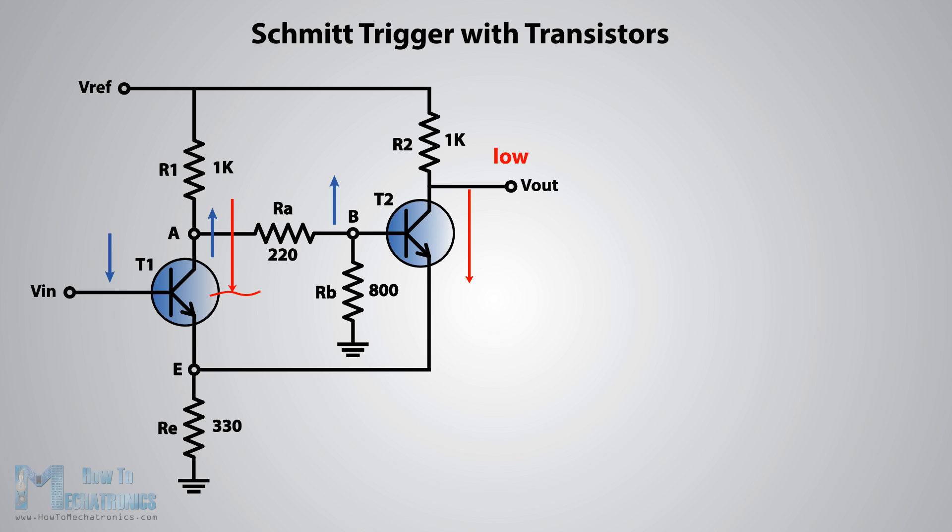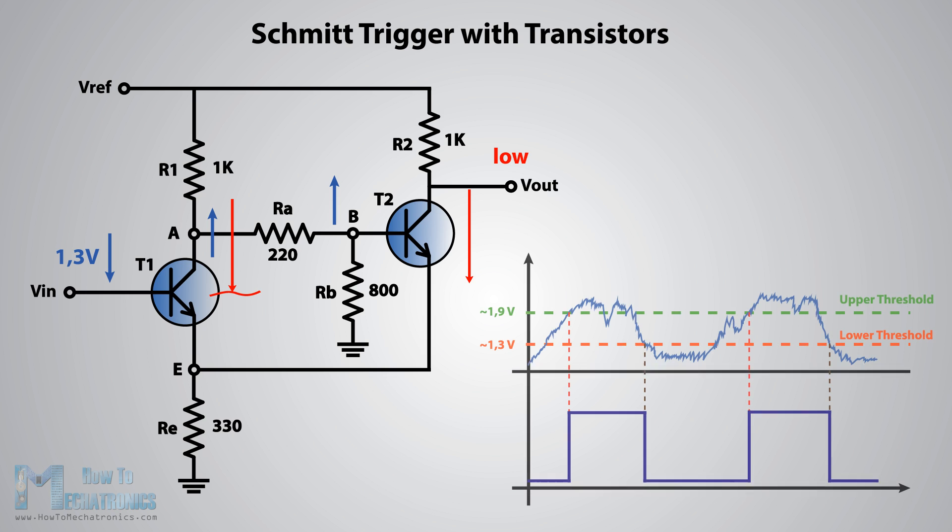In our case the VIN input needs to drop to about 1.3 volts to turn off transistor T1. That's it, now the cycle repeats over and over again. So we got two thresholds: the high threshold is at about 1.9 volts and the low threshold is at about 1.3 volts.